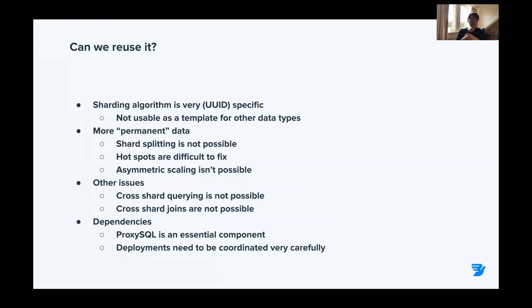Can we reuse this for our other sharding solutions? Not all of them — it's very specific to the UID, so it's not a template for other data types. For more permanent long-term storage, it's a bit more difficult to maintain, as we'd need to handle operational concerns like shard splitting or hotspots. Cross-shard querying and joins are also not possible, which means we have a couple of significant downsides in this system.